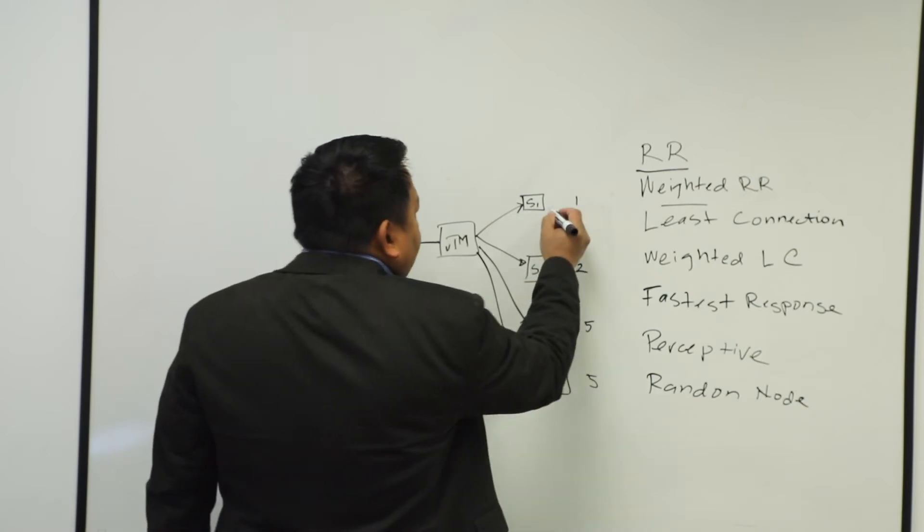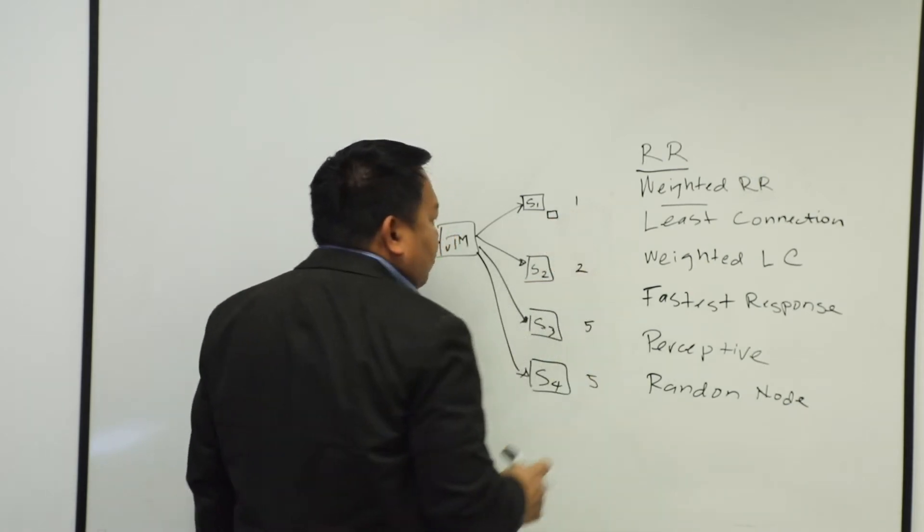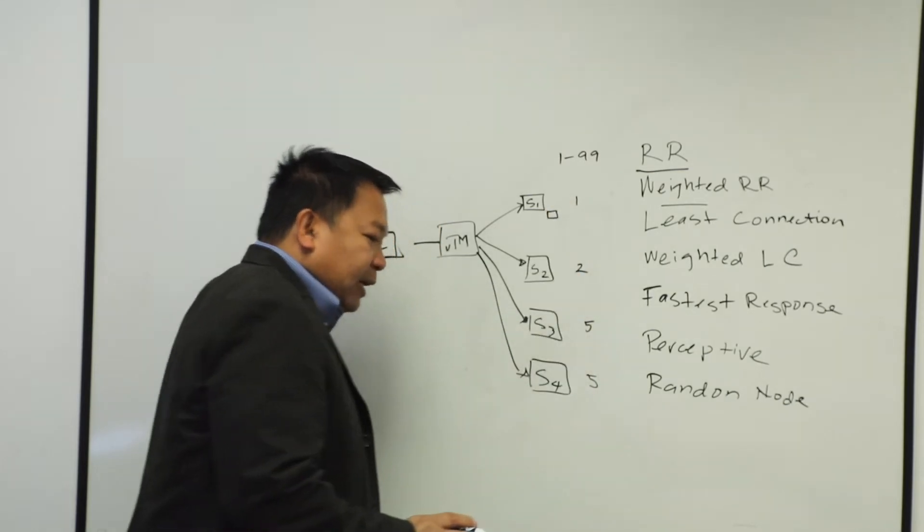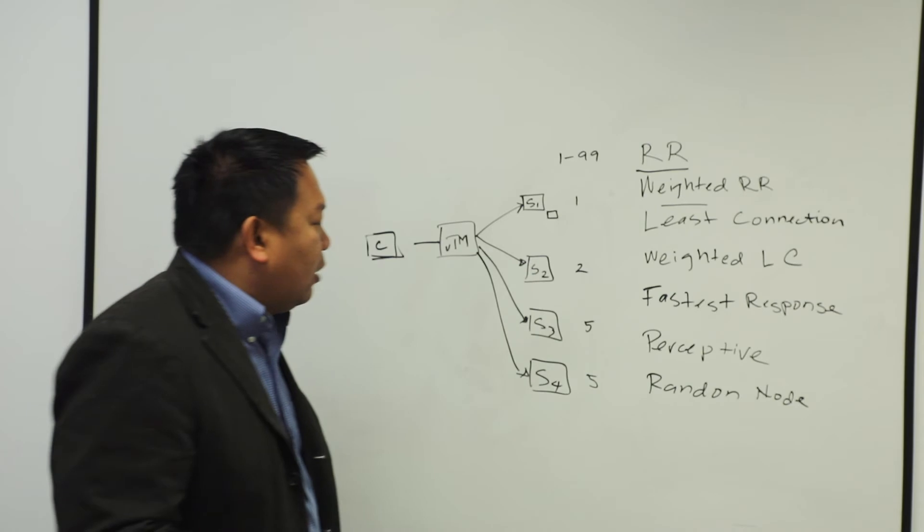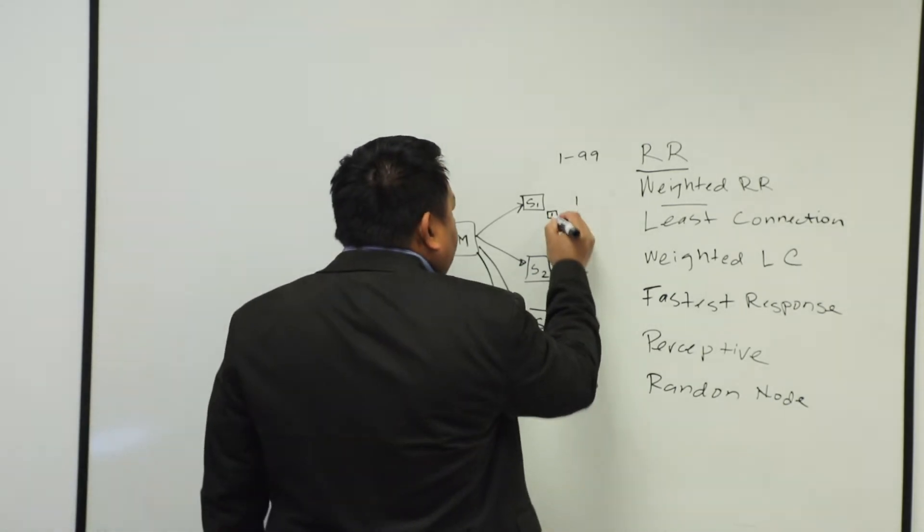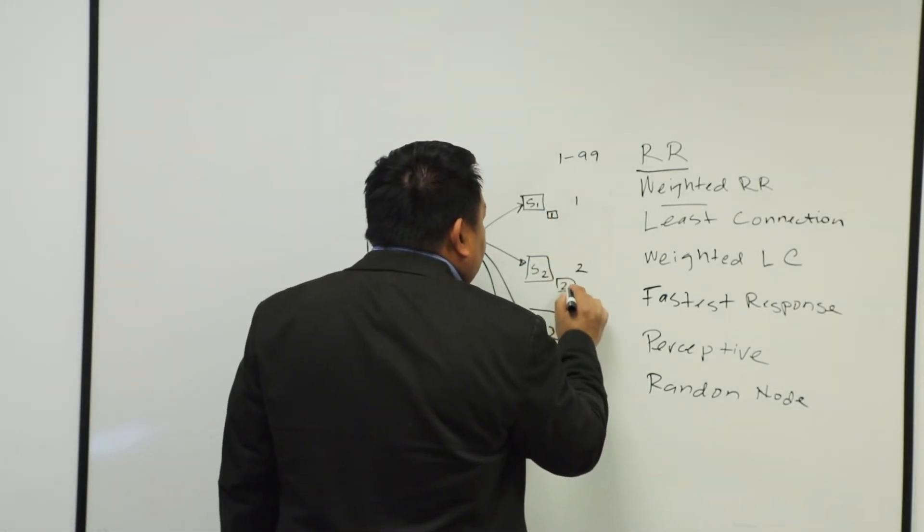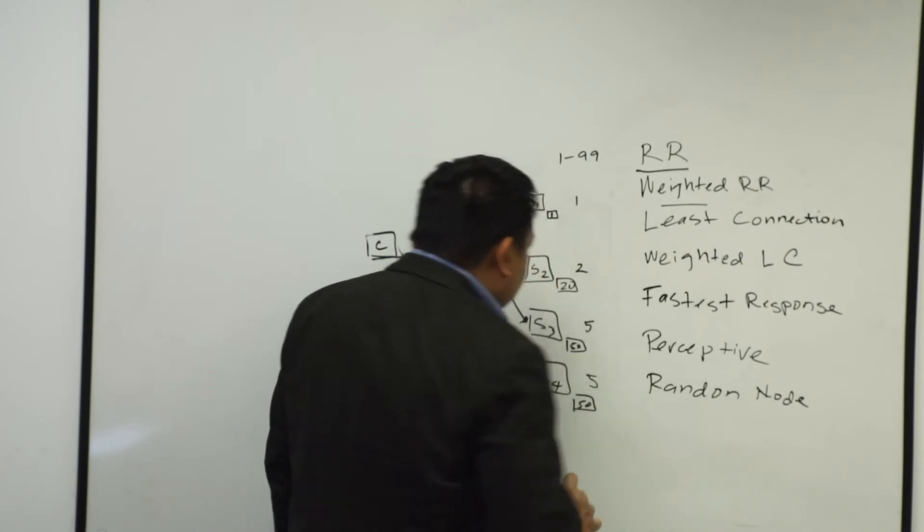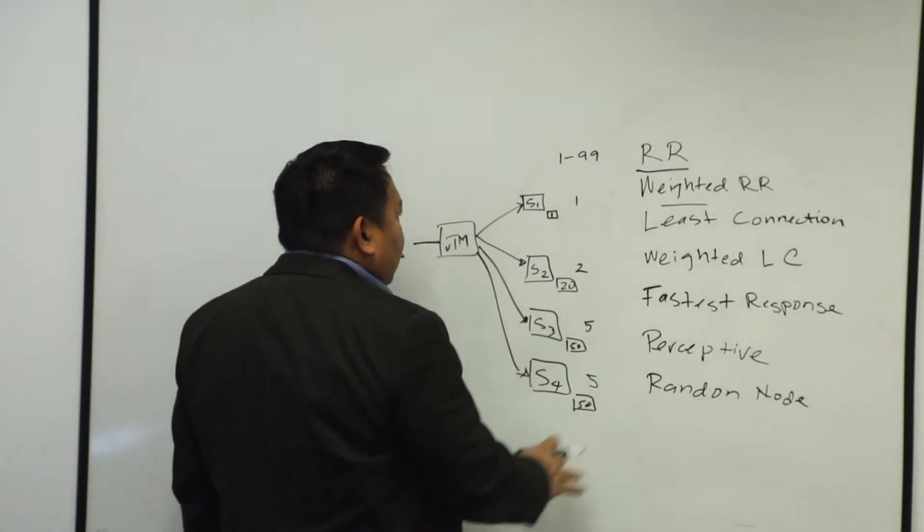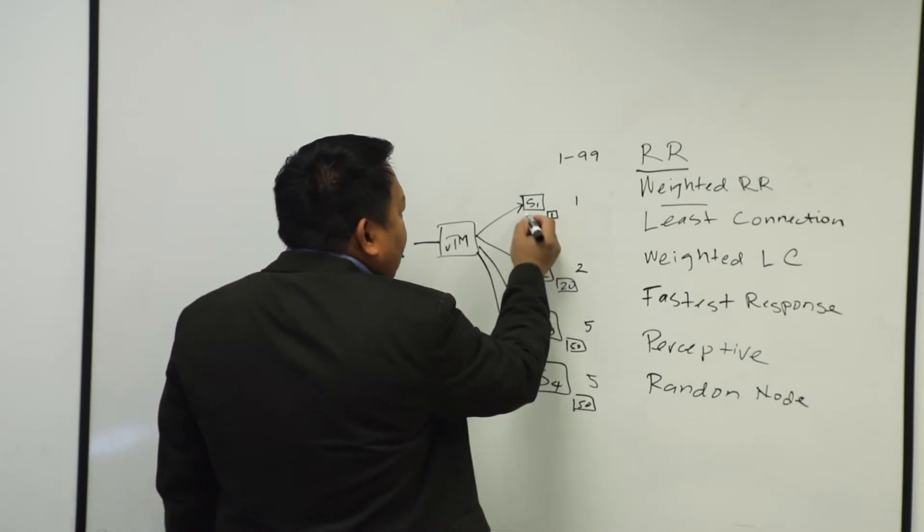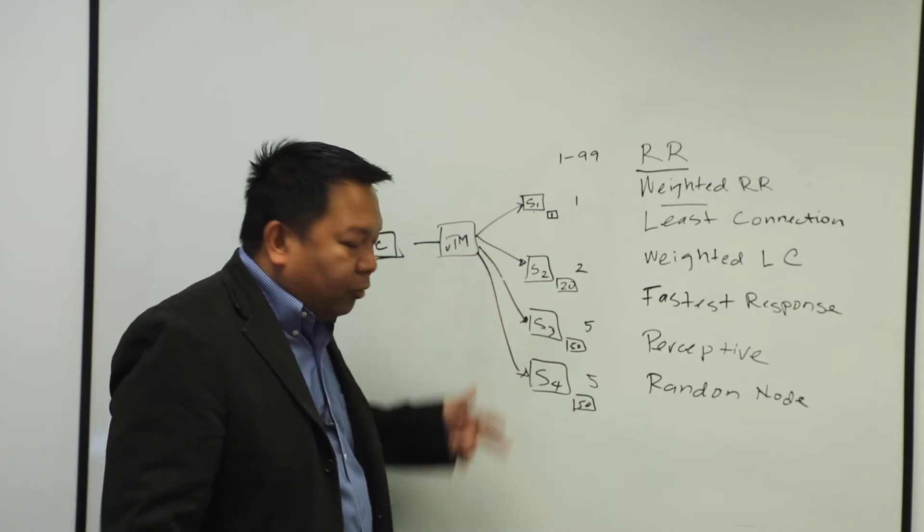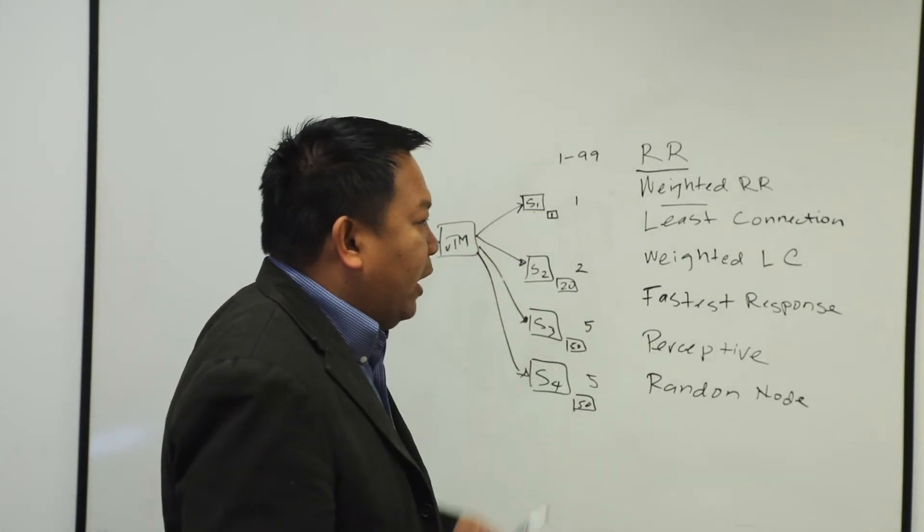So with weighted round robin, you can pretty much define, as I mentioned before, from one to 99, configuration one as the most powerful one. So in server one, I put one. In this, I probably 20, let's just say 20. And then the older servers, I can probably configure it as 50. So what it's going to be doing is it's still going to go to its round robin, but it's going to take priority on server one in comparison to server two, three, or four. That's your weighted round robin.